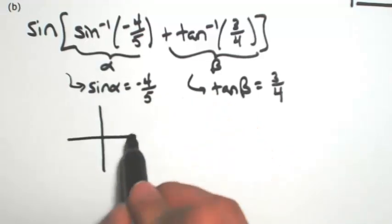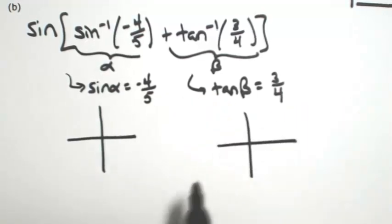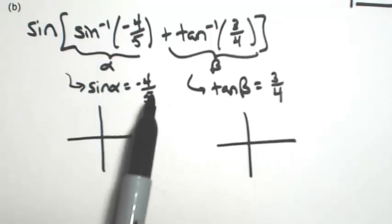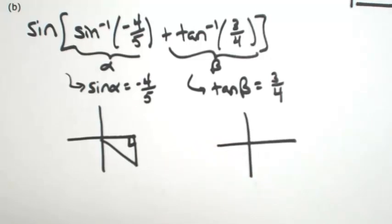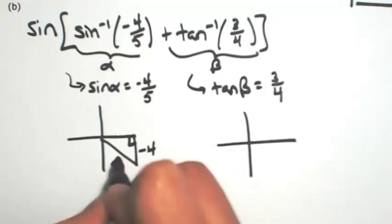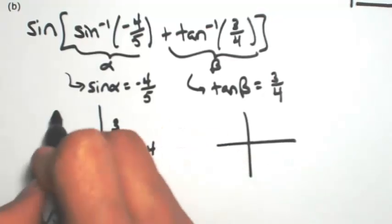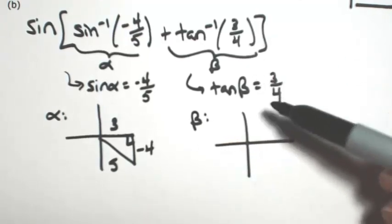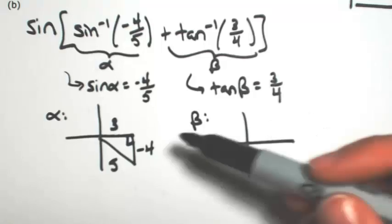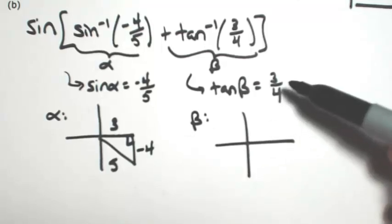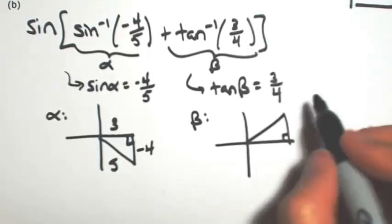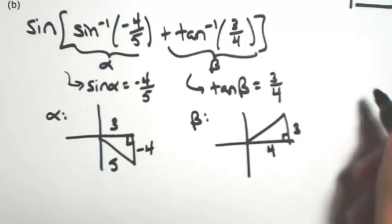I'm going to draw the triangles in the proper quadrants based on the inverses. For inverse sine, the outputs are only in the first and fourth quadrants. Since it's negative, it's got to be in the fourth — it cannot be anywhere else. The opposite is negative 4, hypotenuse is 5, making the adjacent 3. For beta, inverse tangent outputs are also only in quadrants 1 and 4, so the positive value is in the first. Opposite over adjacent gives 3 over 4, making the hypotenuse 5.